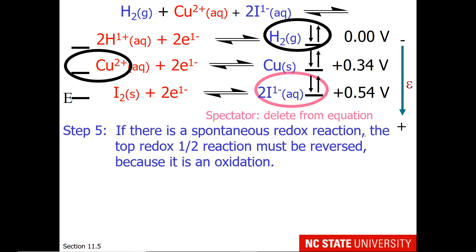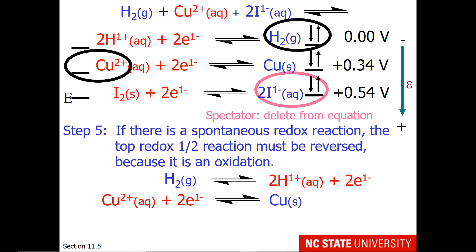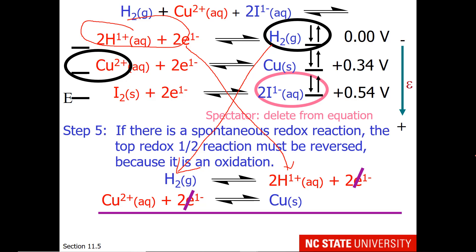If there is a spontaneous redox reaction, the top half-reaction must be reversed — this is our anode, where oxidation occurs. I'll leave the bottom reaction as a reduction: copper-2+ plus two electrons going to copper. The hydrogen reaction I will flip, so my product becomes reactant and reactants go to the product side. I add the reactions so the electrons cancel — two electrons in and two electrons out. Our net redox reaction is: copper-2+ in solution reacts with hydrogen gas to produce solid copper and two H⁺ ions.